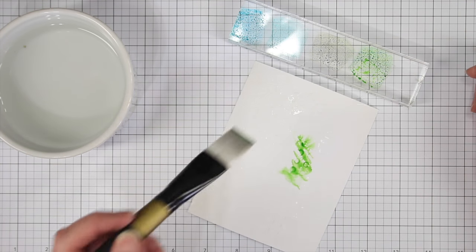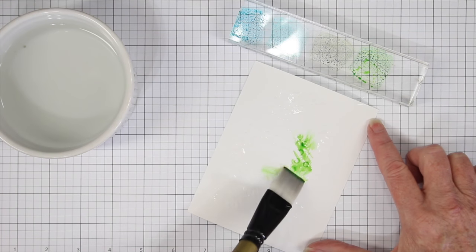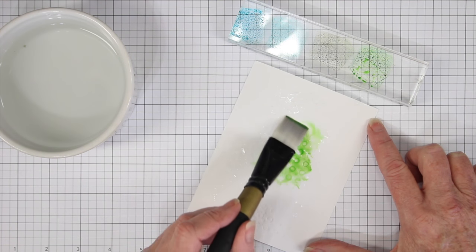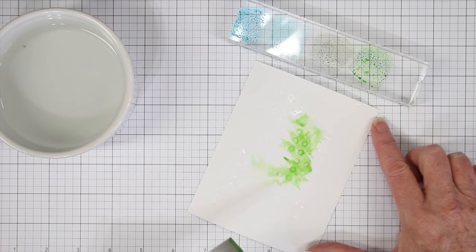So just by tapping that brush into the color, I can just go ahead and tap onto this background, and it starts to flow into the areas that I want.